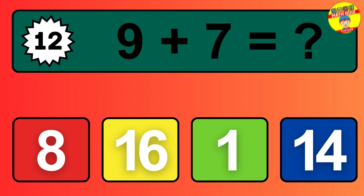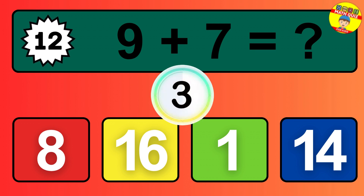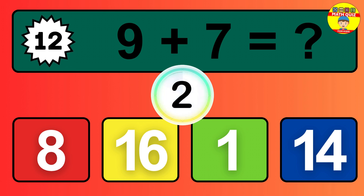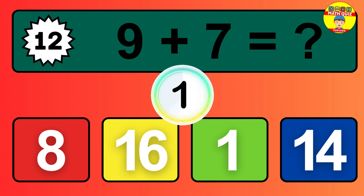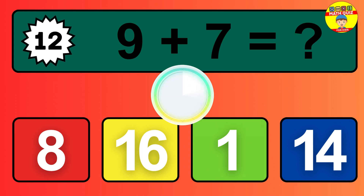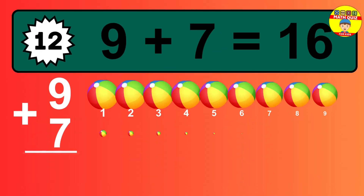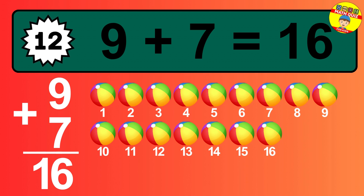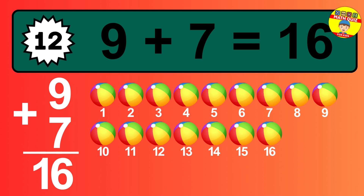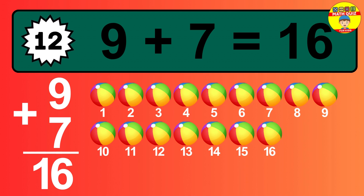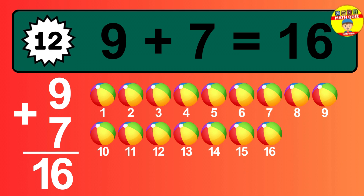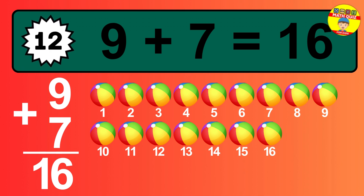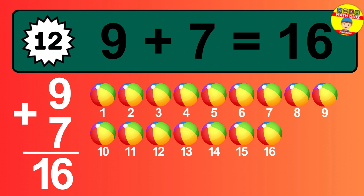Question 12. 9 plus 7 equals what? The answer is 9 plus 7 is 16. Let's count it. 1, 2, 3, 4, 5, 6, 7, 8, 9, 10, 11, 12, 13, 14, 15, 16.